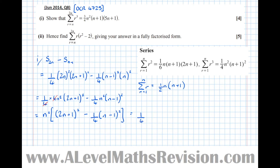So n squared times 2n plus 1 squared, subtract a quarter times n squared times n minus 1 squared. Taking out a factor of a quarter: a quarter of n squared, and now 2n plus 1 squared is multiplied by 4, so a quarter times 4 of them is still 1 lot of 2n plus 1 squared, take away n minus 1 squared.